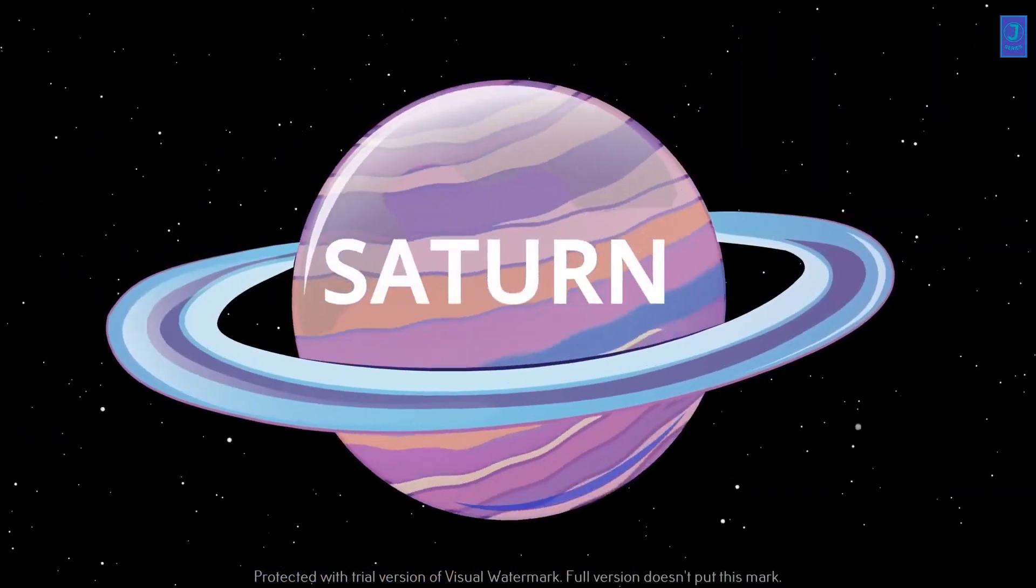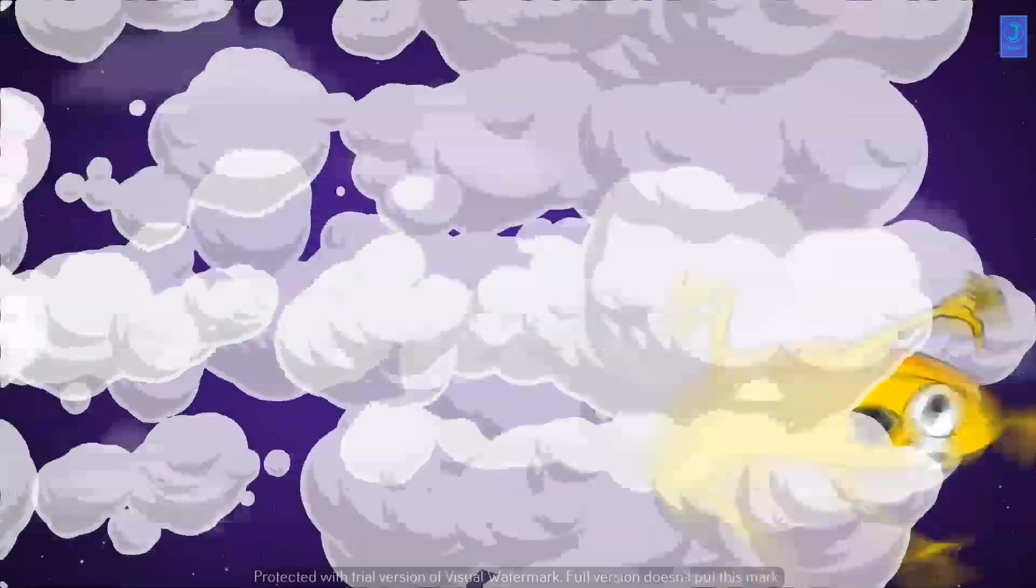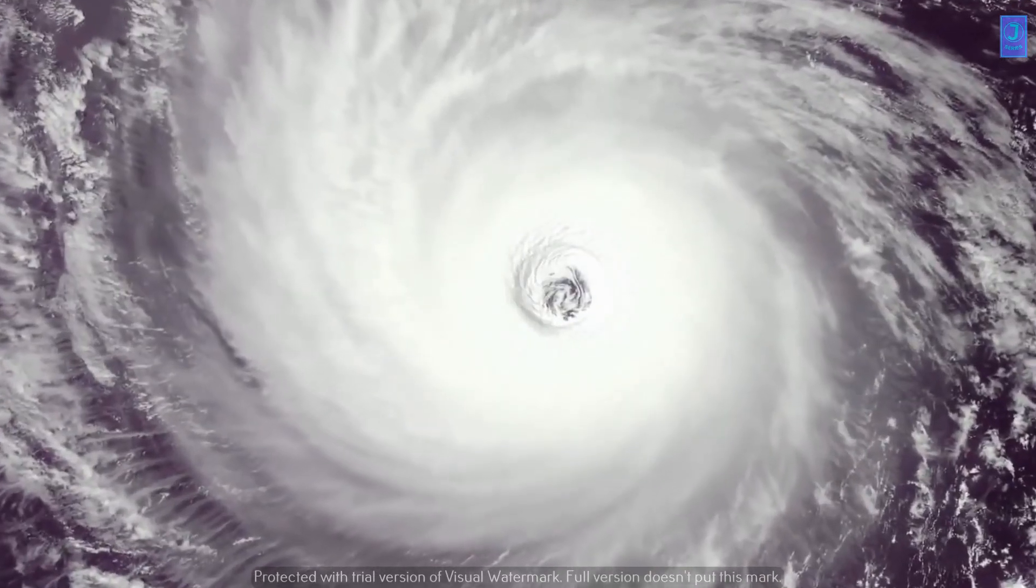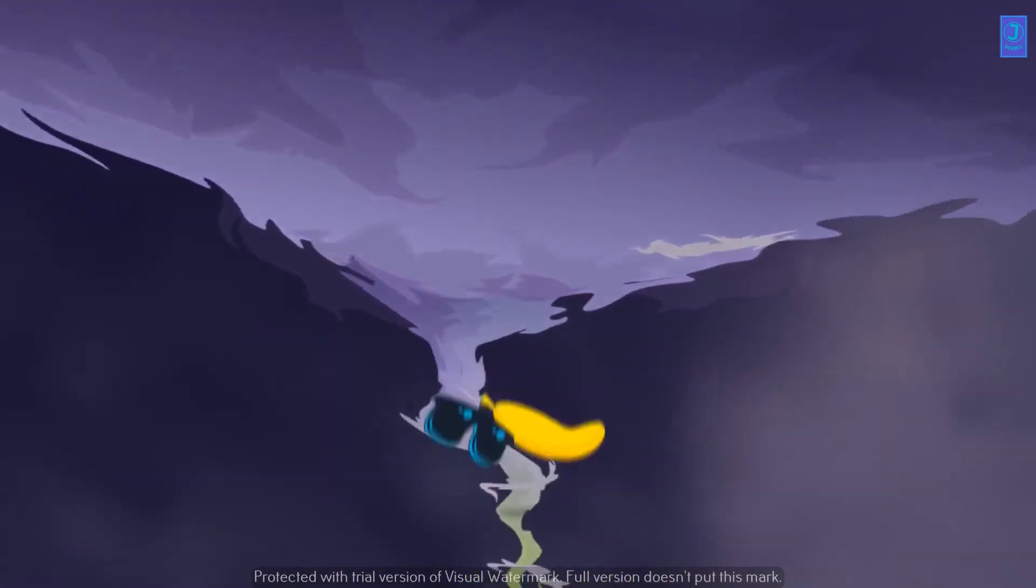Saturn. It's another gas giant, so you'll be sinking in its clouds forever until powerful winds crush you. It spins faster than any other planet, creating crazy whirlpools on its surface. You won't even have time to blink before turning into space dust.